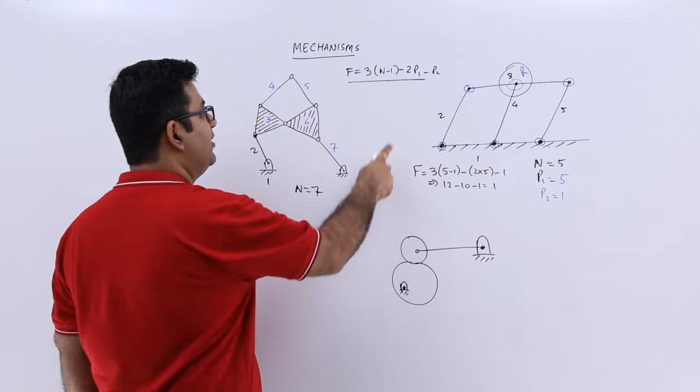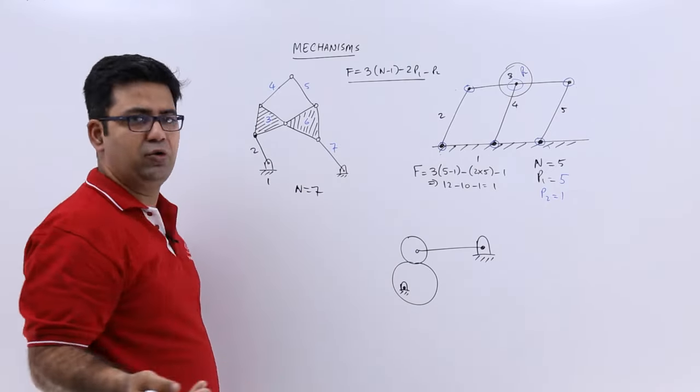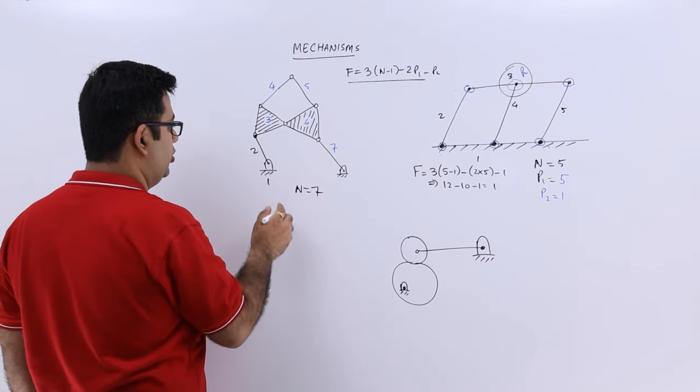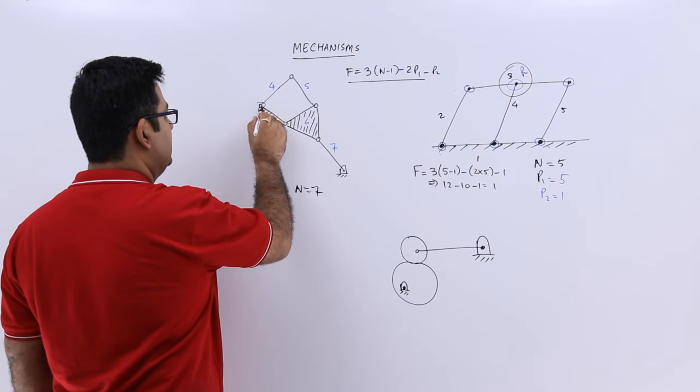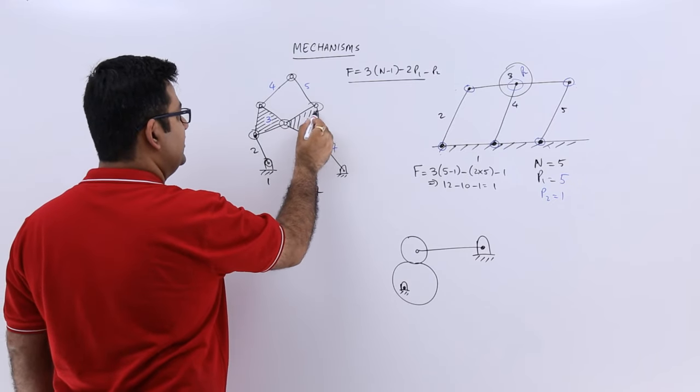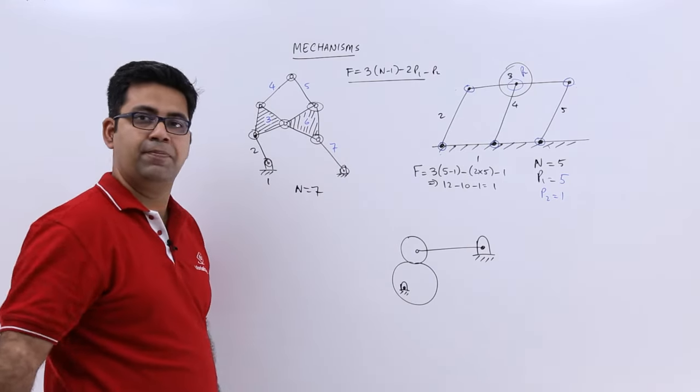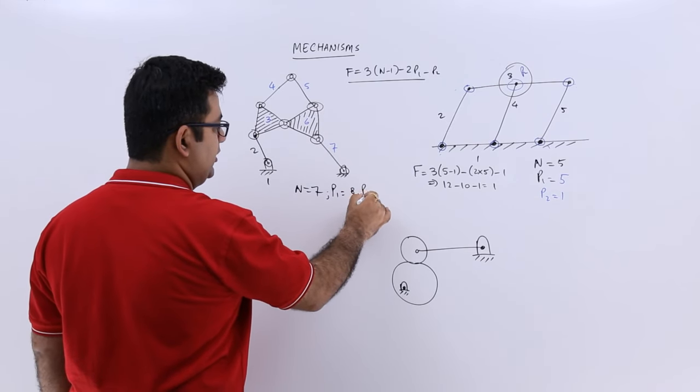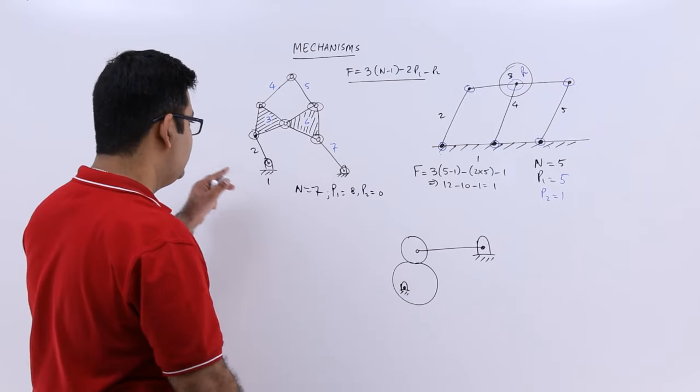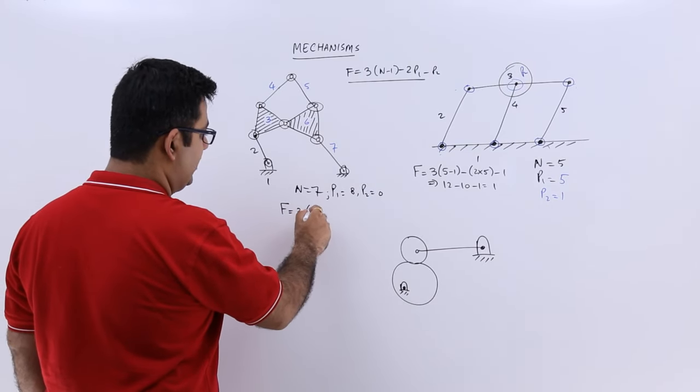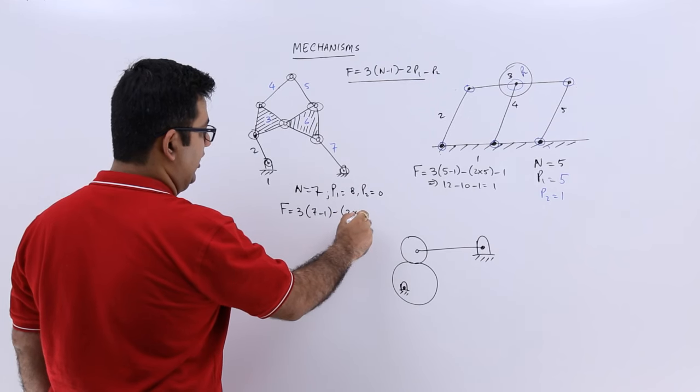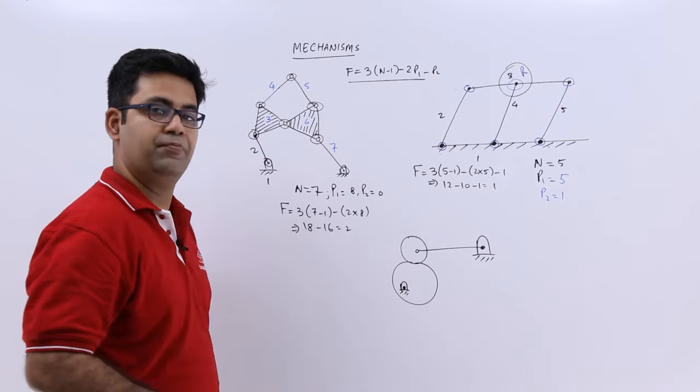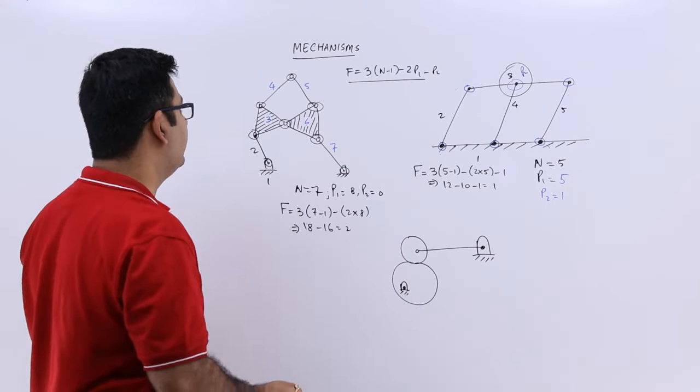Now let us talk about p1 and p2. So it is very clear that there is no p2 in this case. All are single degree of freedom joints. So you will have 1, 2, 3, 4, 5, 6, 7, and 8. So your value of p1 becomes 8, and p2 is 0. So for this mechanism, the degree of freedom will become 3(7-1) minus 2(8), which is 18 minus 16, which is 2. So you have a degree of freedom as 2 for this mechanism.